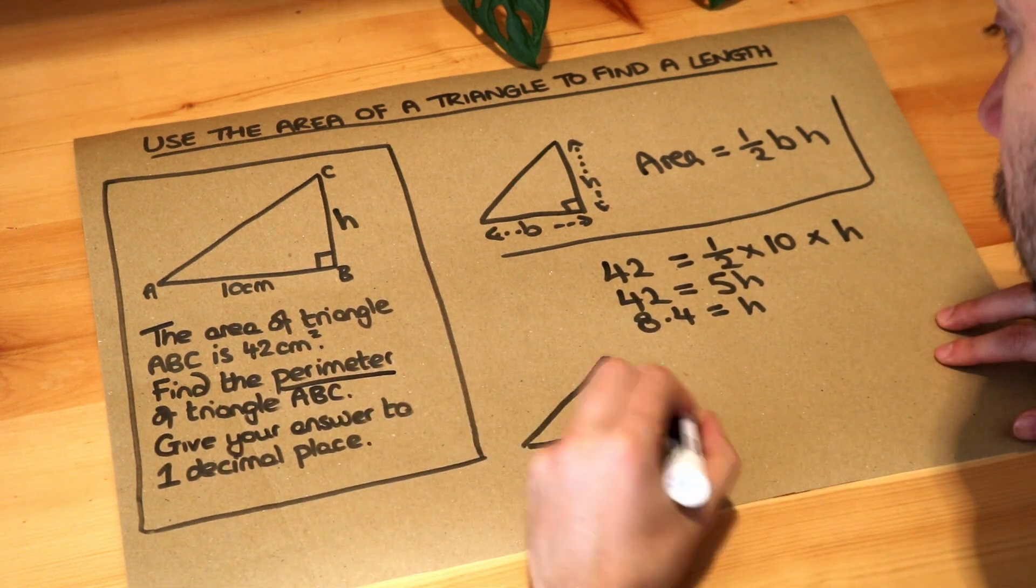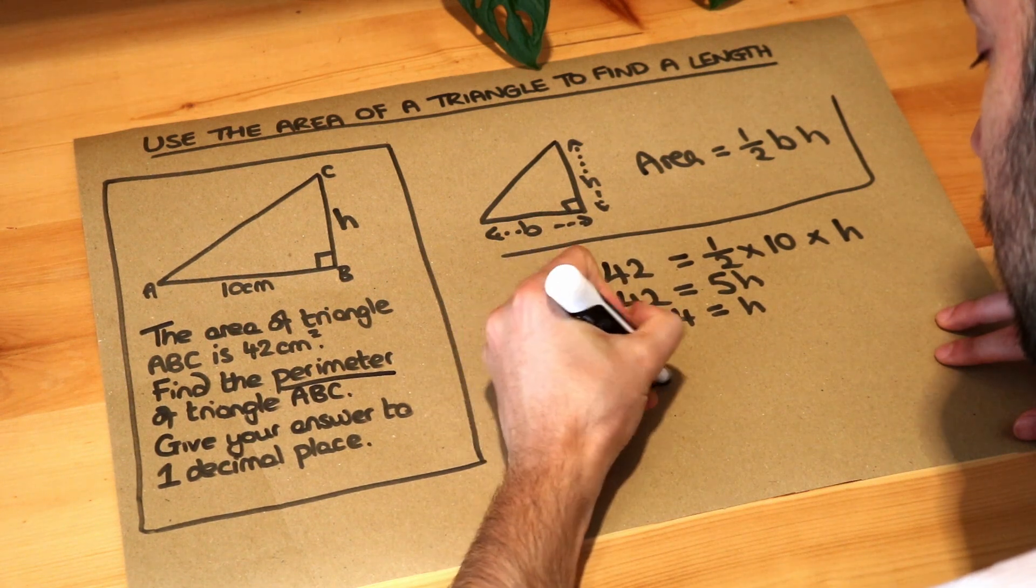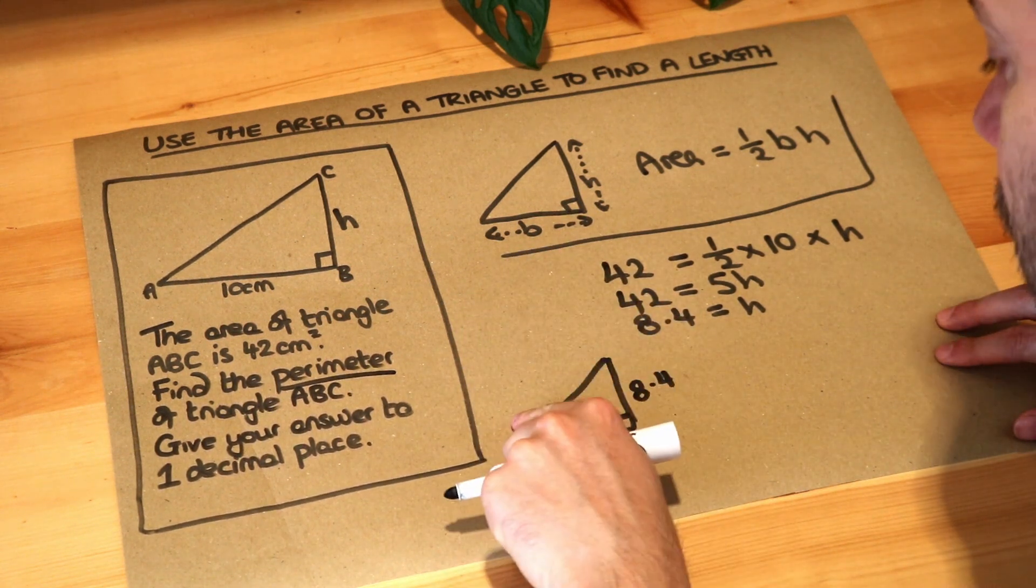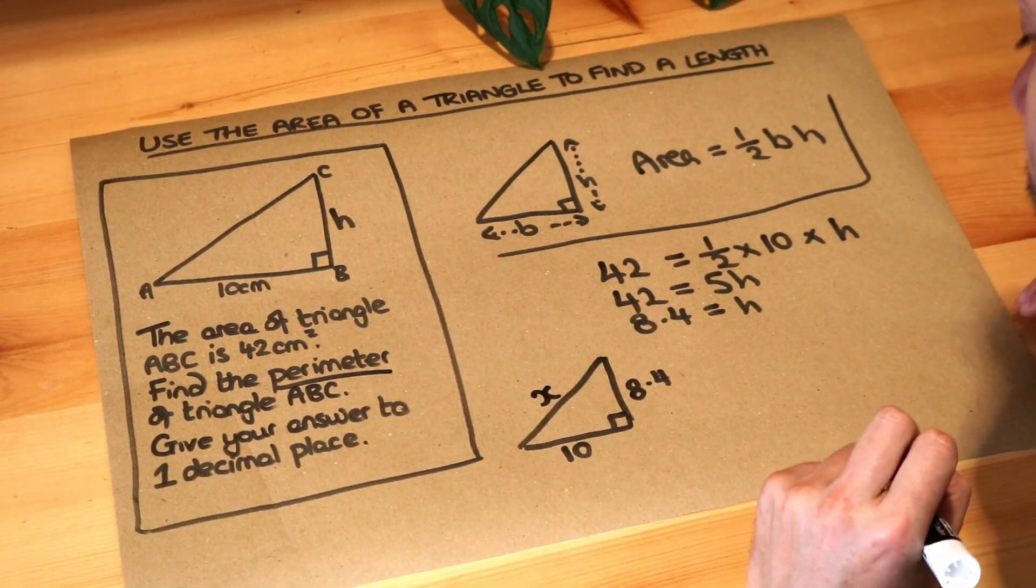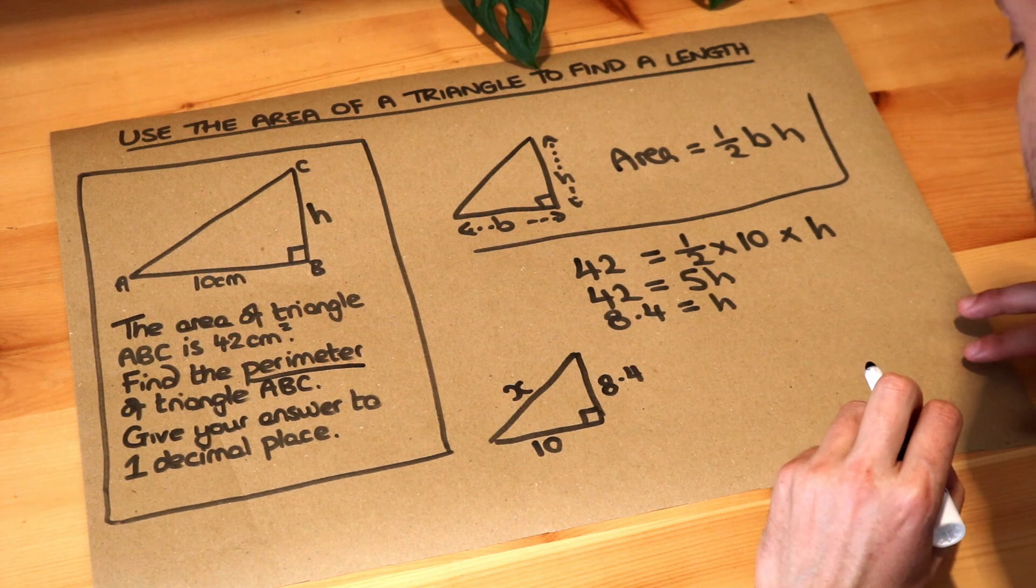But let's put the lengths we know. We've got 10 here. We've got the height is 8.4. And we want to find this hypotenuse. I could use H, but that's going to confuse it with this H here. So I'm just going to use X instead. So if we plug it into Pythagoras theorem,